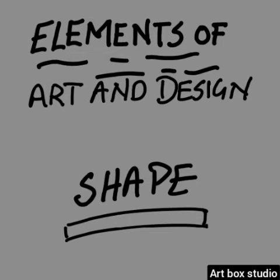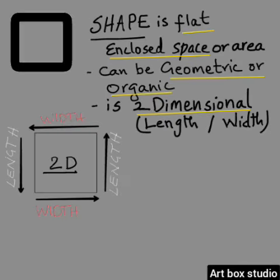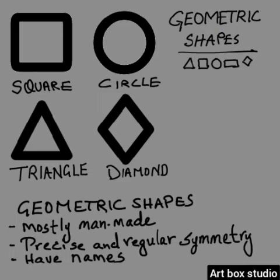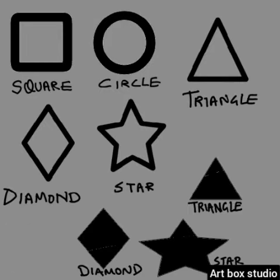Shapes are 2D enclosed spaces that can be geometric or organic. They have two dimensions: length and width. Geometric shapes have names and symmetry — they are very precise, as you can see here.